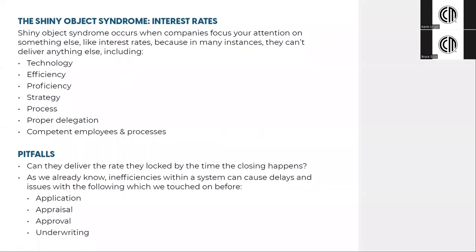Let's talk about the shiny object syndrome, which I had mentioned earlier in relation to interest rates. What does this term mean and how does it relate to your mortgage? Shiny object syndrome occurs when companies neglect what's really important because they're focusing your attention on something else — specifically the supposed fantastic rate.